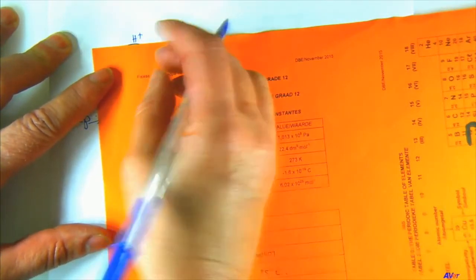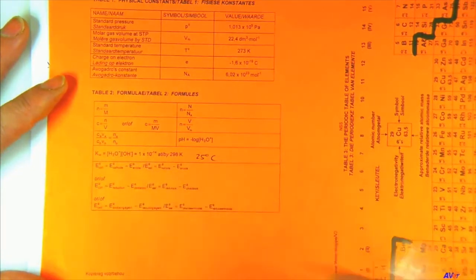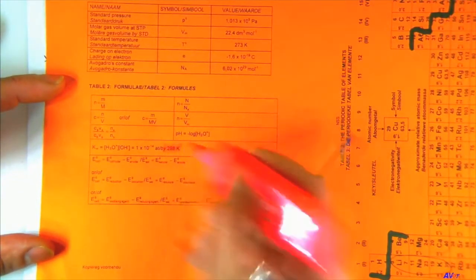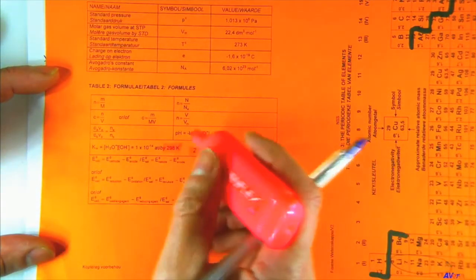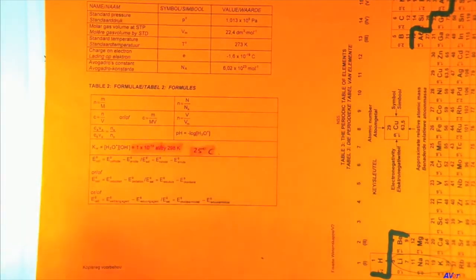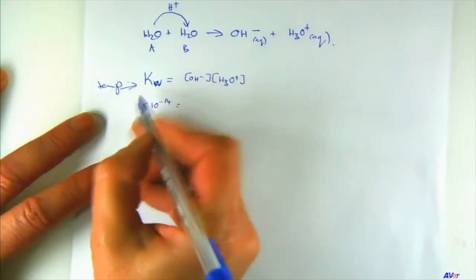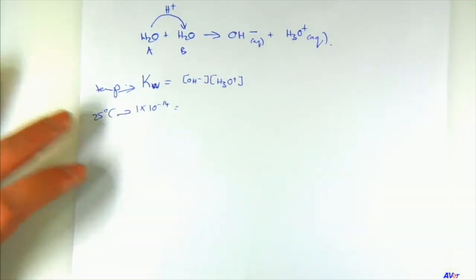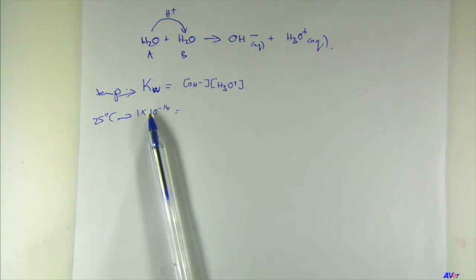Your information sheet gives the Kw equation and states that at 298 K — which is 25°C — the Kw value is 1 × 10⁻¹⁴. This value is only valid at 25°C. The reason we use 25°C is that it approximates normal lab conditions. If a question involves a different temperature, a new Kw value must be provided.